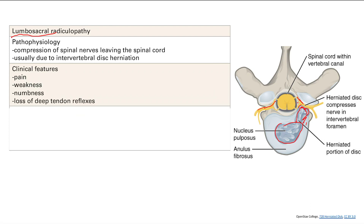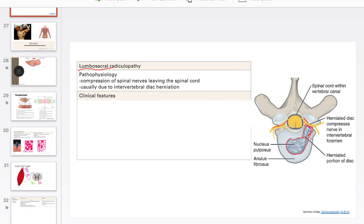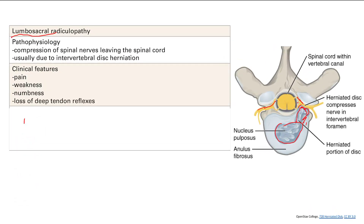You'll also know that weakness will be around the knee, and the sensation loss will be in the same area. The key things to remember are: L4 and L5 will give you weak dorsiflexion — that's moving the foot up.